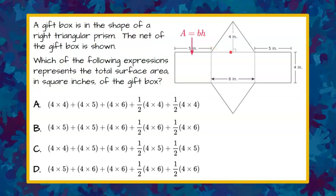And then we have two triangular faces, which are found using the formula for a triangle: area equals one half base times height.